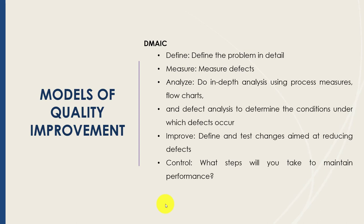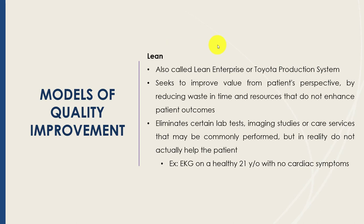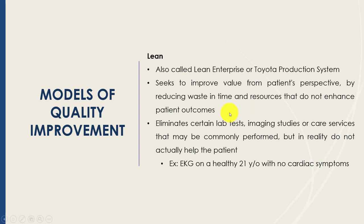Another model of quality improvement is Lean, which comes from the Toyota Production System. Lean seeks to improve value from the customer's — or in our case, the patient's — perspective by reducing waste, time, and inefficiencies in processes that don't actually enhance the patient's outcome.